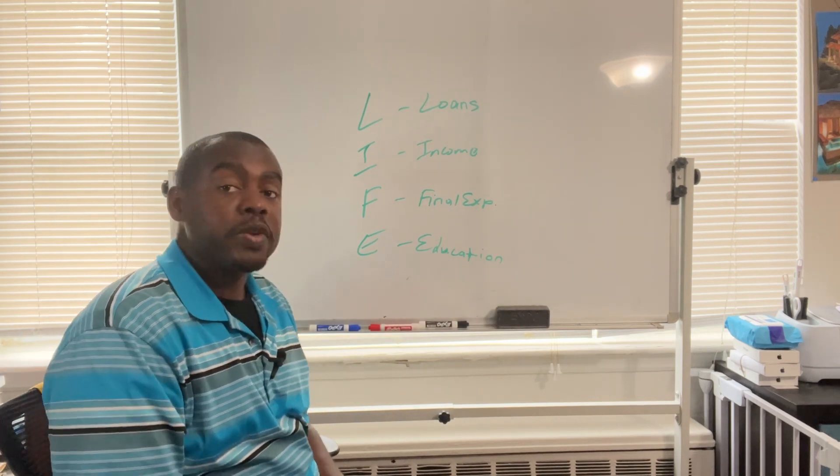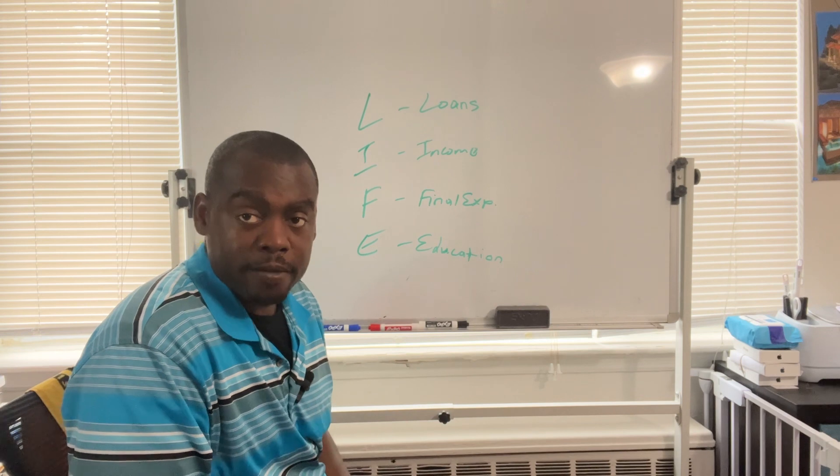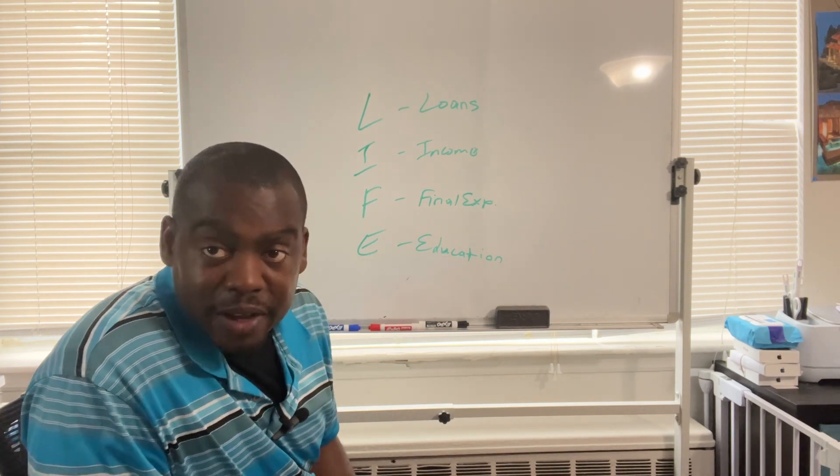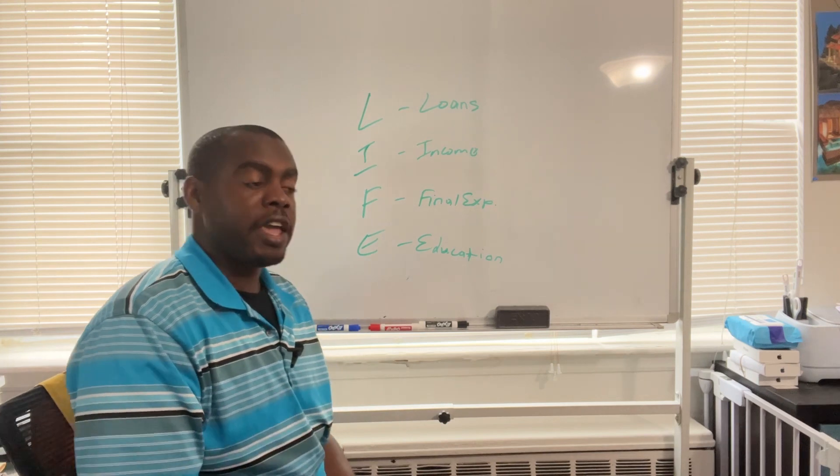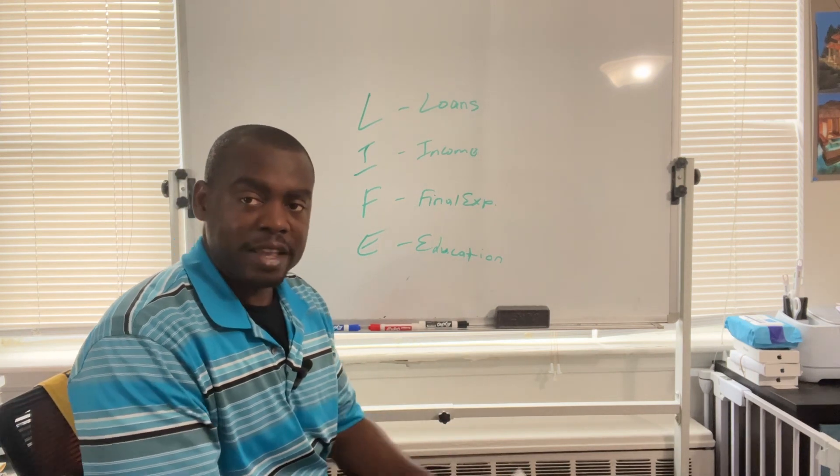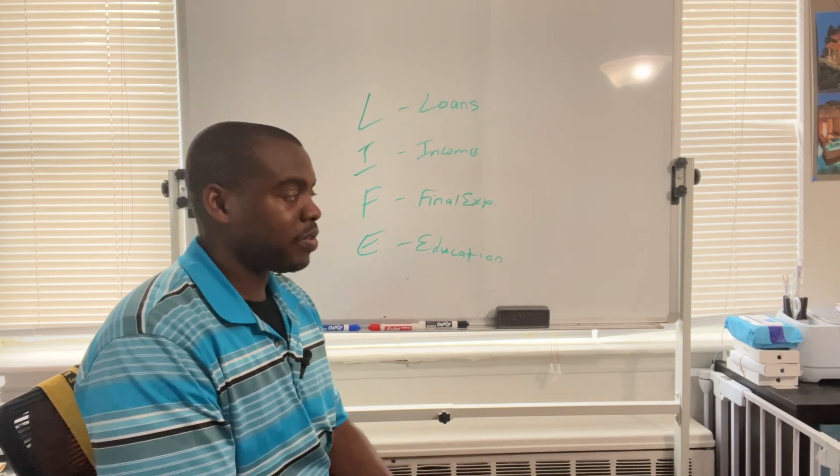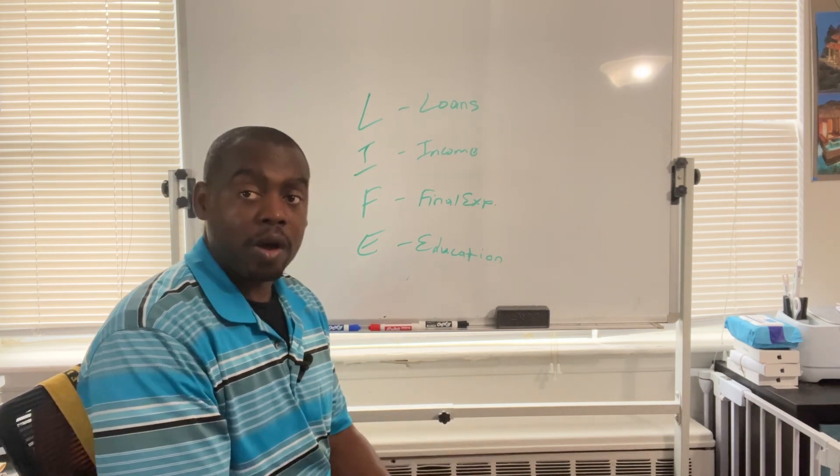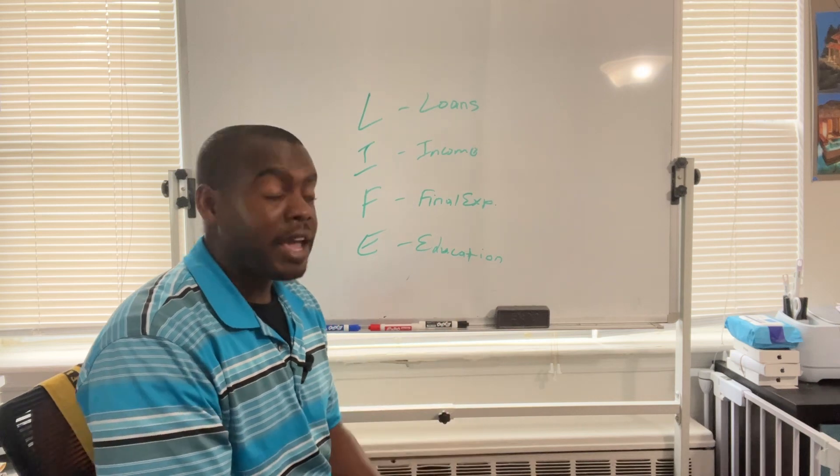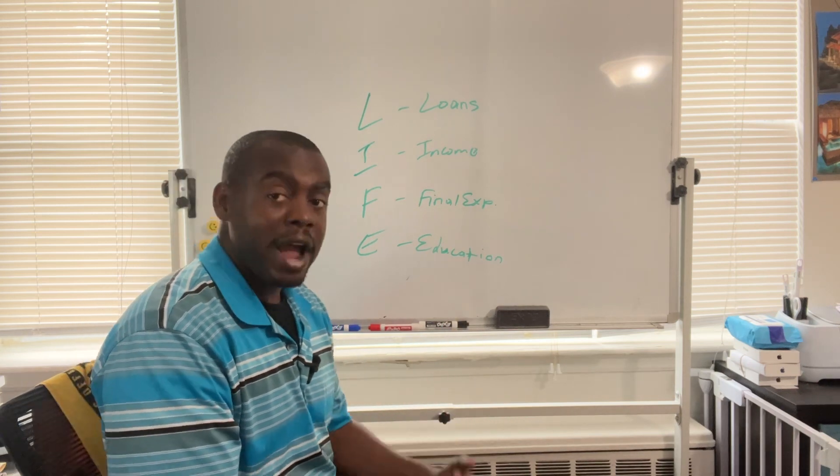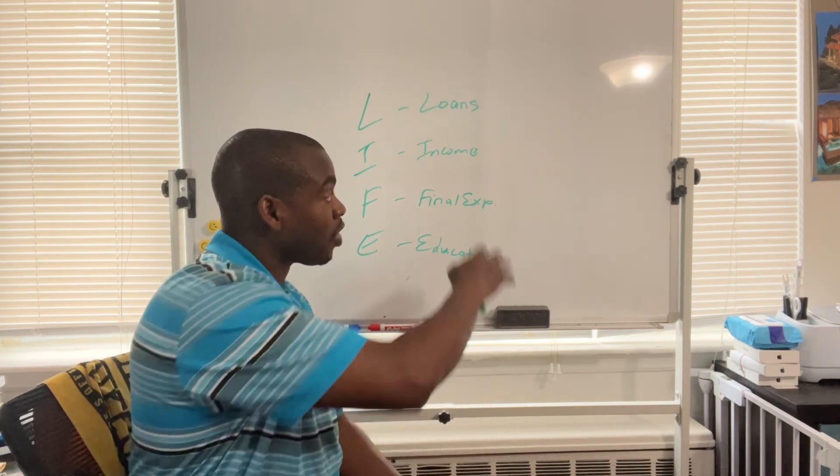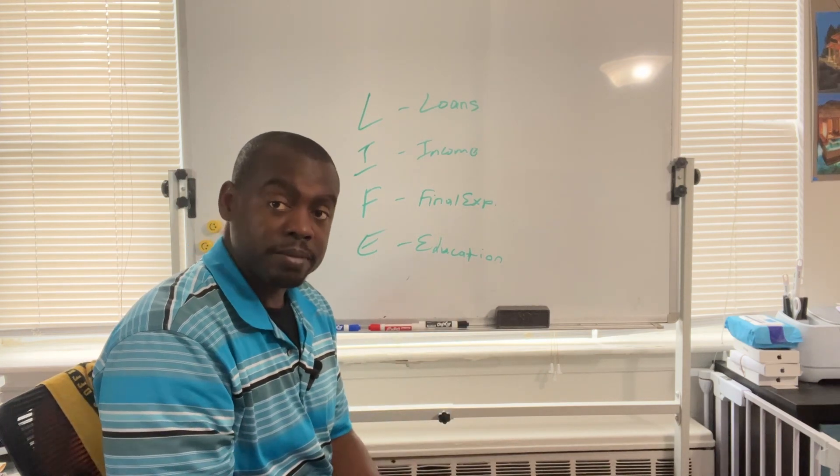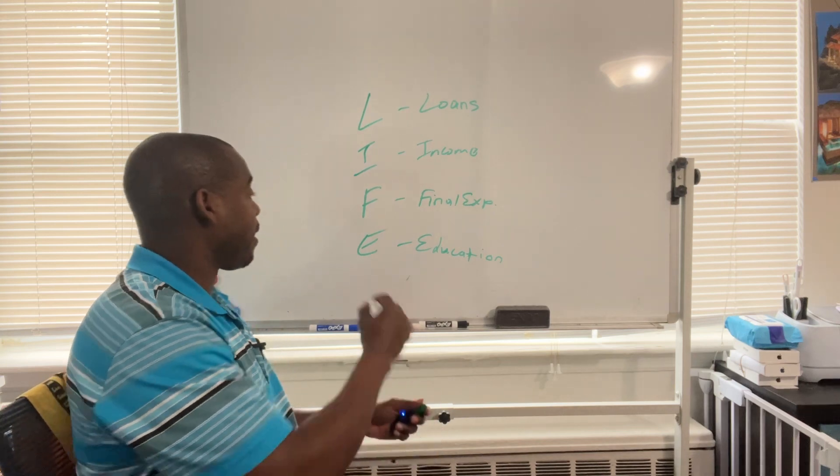So when you add up all that, these are your liabilities. You add up all that, then you take whatever assets you have and take the value of it - the value of the assets including any cash you have on hand or any investments - and you're going to subtract it from the cost of all this. Then you're going to get the final number that you need.